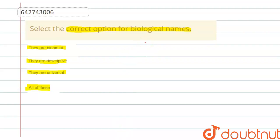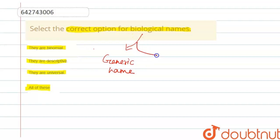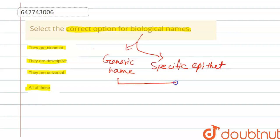Biological names are the scientific names of organisms, composed of two components. The first is the generic name, which refers to the genus of the organism. The second is the specific epithet, which refers to the species. These two components together form the biological name, and because there are two components — genus and species — they are known as binomial.